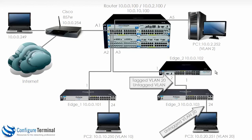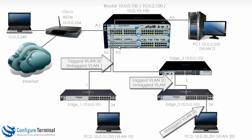Edge 2, which is our 3500 switch, needs to have its ports configured as untagged for VLAN 1. So both port 2 and port 1 are going to be configured as untagged for VLAN 1 and tagged for VLAN 20. The 5406 needs to have port A3 tagged for VLAN 20.